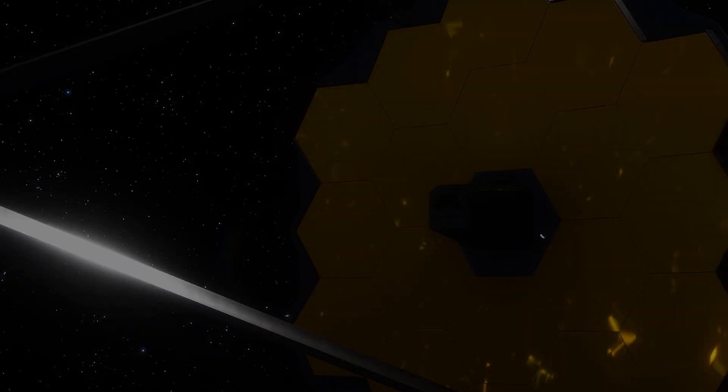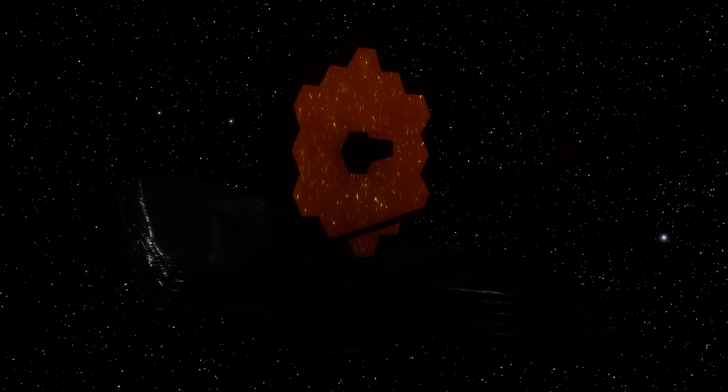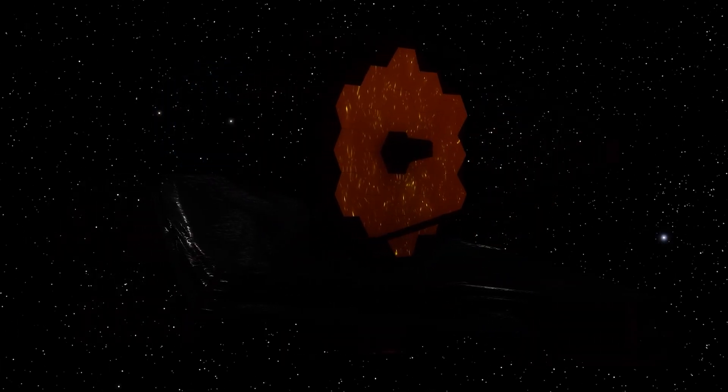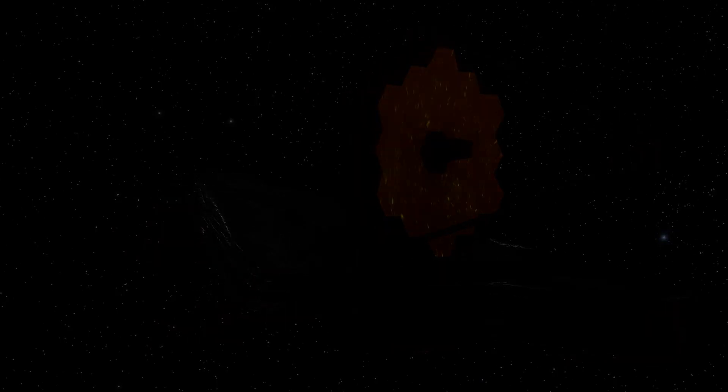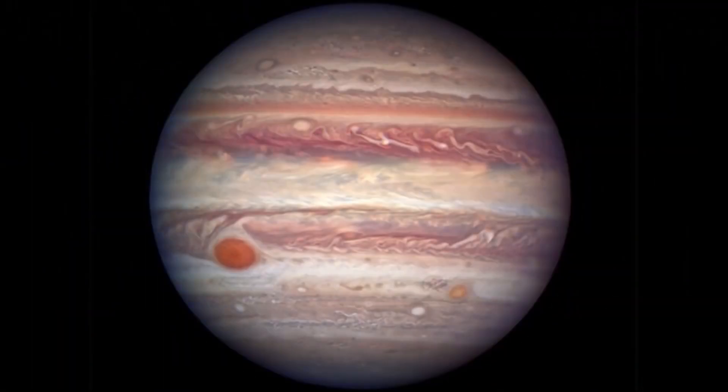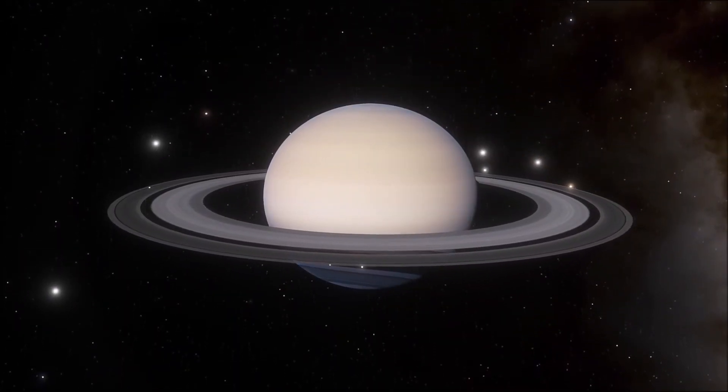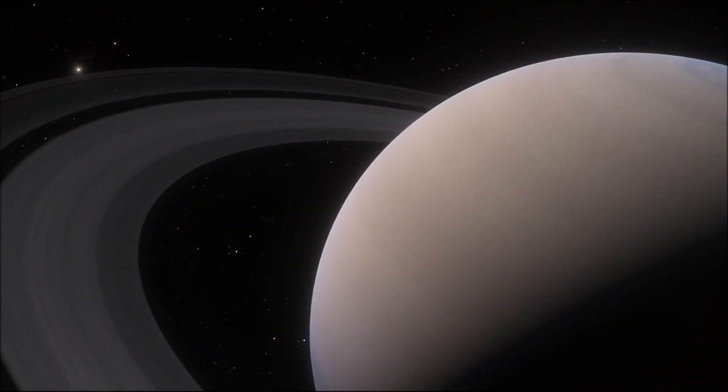The James Webb Space Telescope, the JWST, is the most advanced telescope ever built, being a hundred times more powerful than its predecessor. With its help, we will be able to unlock the secrets of this vast expanse of the universe. In the past, we have discovered a wide variety of planets, from small rocky worlds to gas giants larger than Jupiter, as well as extremely hot planets and habitable ones.